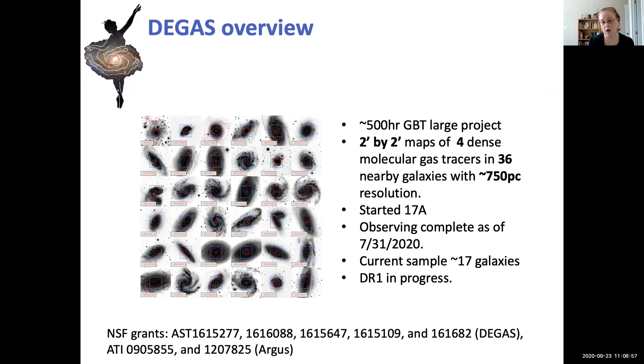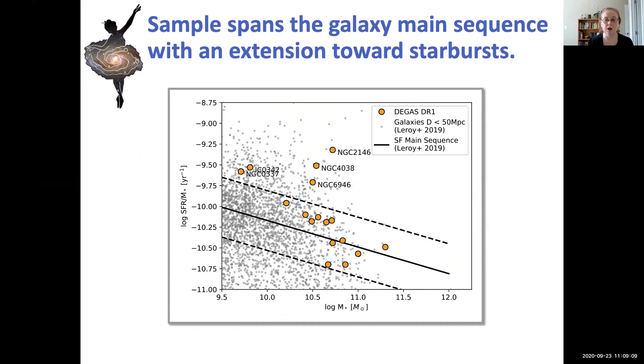Our current sample is 17 galaxies. And we're currently putting together a data release one. So just to give you a quick peek at some of the data, I've put together a plot showing the star formation rate over the stellar mass, which is the specific star formation rate, and also the log of the stellar mass. And then I've indicated on here the star forming main sequence with these solid lines. And the yellow dots are our DR1 sample.